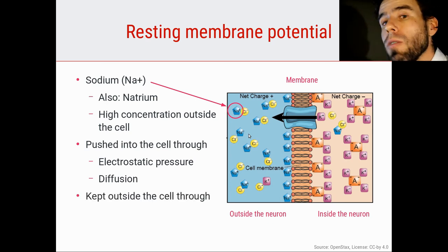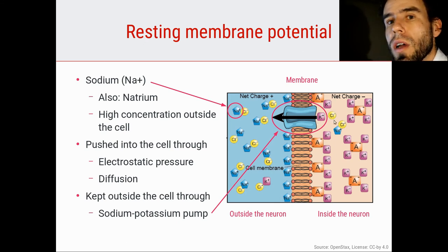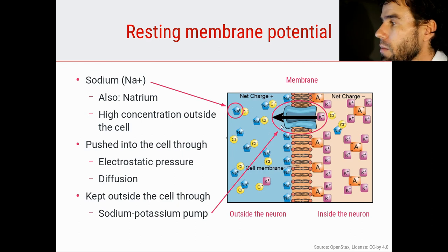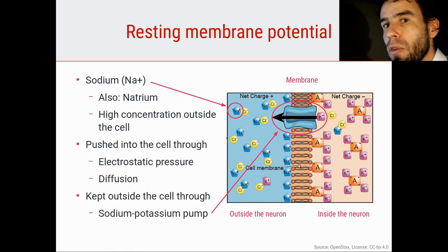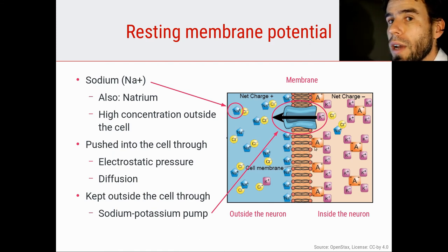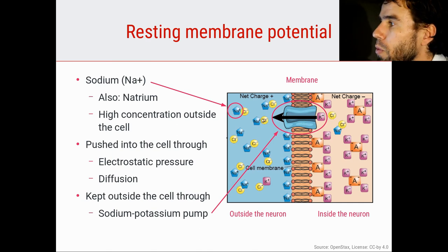Na plus is kept outside of the cell through the sodium-potassium pump — an active transporter pump that uses energy to pump Na plus ions that are inside the cell back outside. The membrane is not very permeable to Na plus, so not that much Na plus actually flows in despite being driven by electrostatic pressure and diffusion. But a little bit will leak in, especially after an action potential when a lot of Na plus flows into the cell. So this transporter pump operates to restore the balance and pump Na plus ions out again.